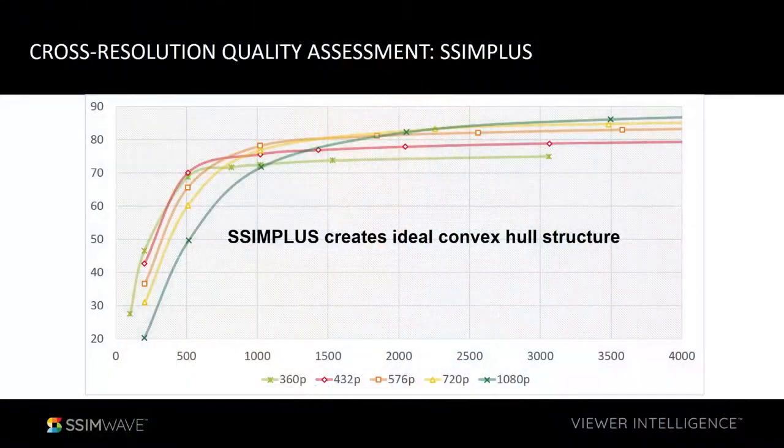Basically, not just VMAF but all traditional metrics — the score only makes sense if you stay with one resolution, one content, one codec. But if you want to compare across different resolutions, the numbers are not consistent and not comparable. That really, really has a very strong constraint on the usage of traditional video quality metrics. What we found is that Simplus just gives us the convex hull structure — exactly what Netflix conjectured. We didn't draw the convex hull first; we saw the Netflix blog, tried Simplus, and Simplus produced exactly that.